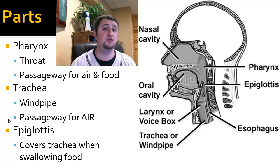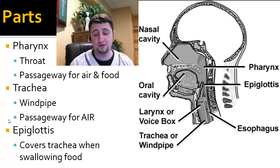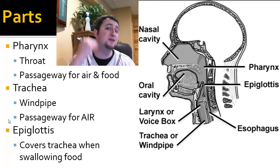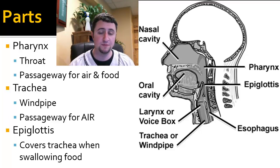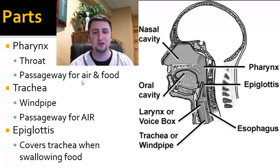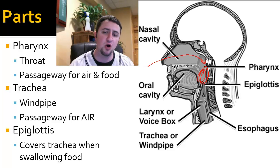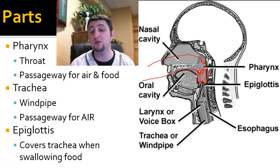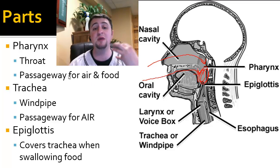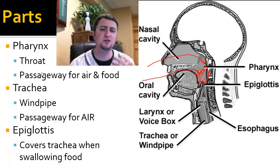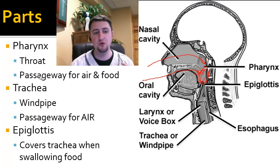There are a lot of parts to the respiratory system. I'm going to work my way from the top down. The first part, from right here in the back of the throat, is called the pharynx — more commonly, we refer to that as the throat. That's the area where air can come in through the nose, and also where air or food can come in through the mouth. It's where all those places sort of meet up, and it allows for the passageway of air or food.